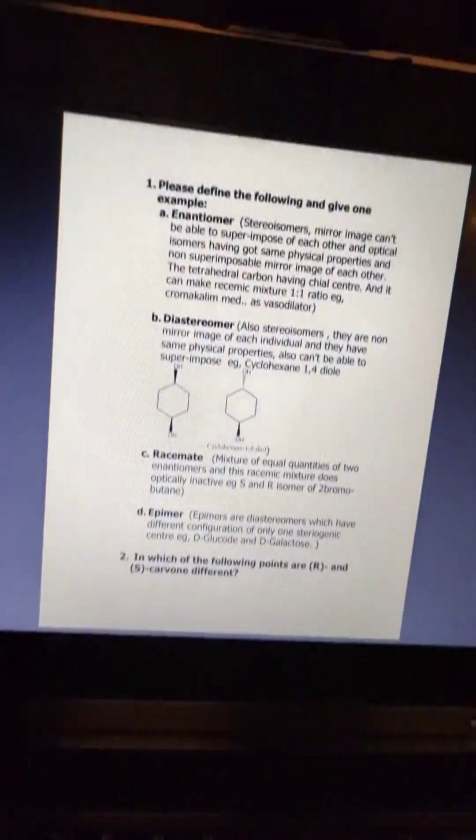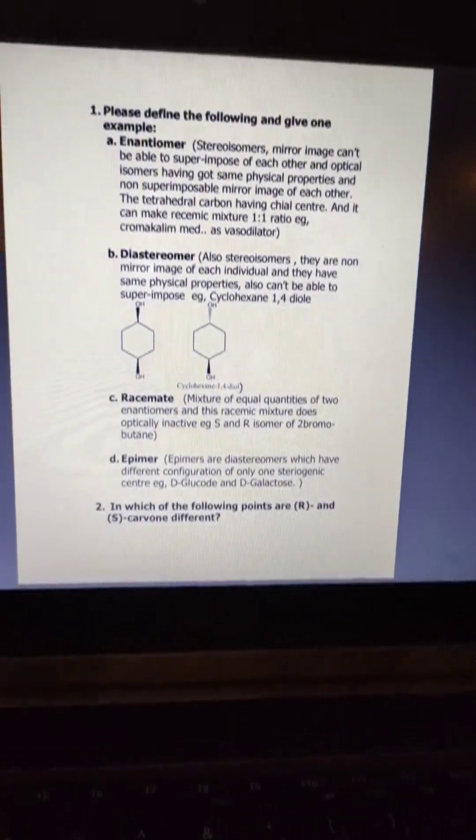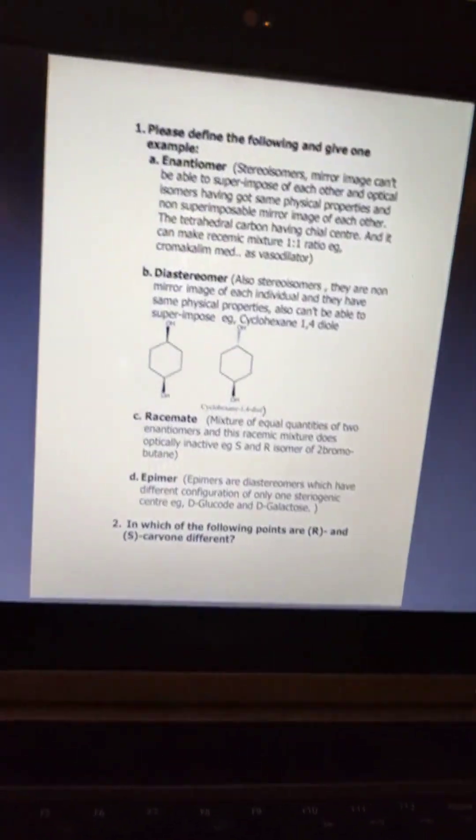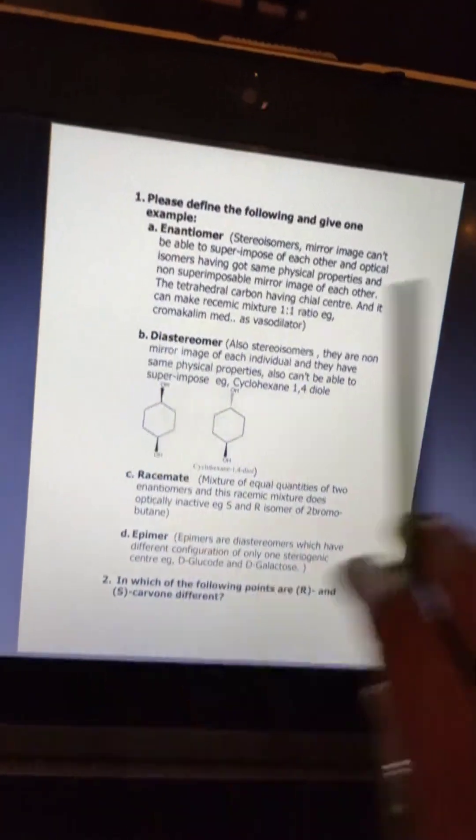Now we are going to discuss some chemistry topics and let's get started. First, we are going to discuss these two important things: the first is the enantiomer and the second one is the diastereomers.